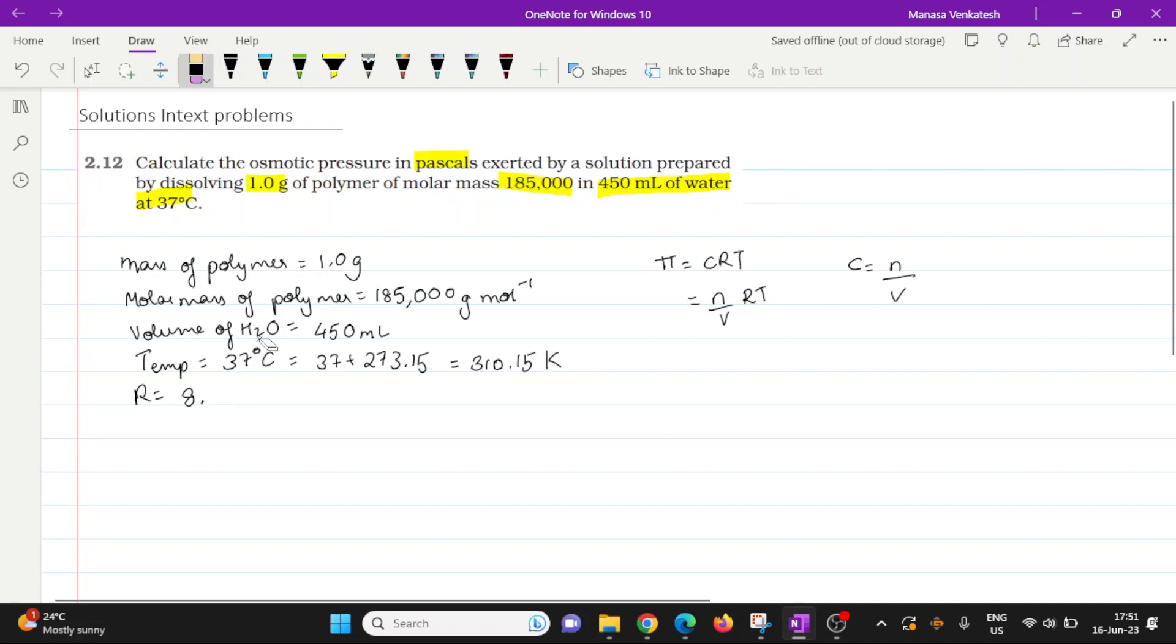we need to use the one which has the unit pascal in. So 8.314 times 10 to the power 3 pascal liters per kelvin per mole. Okay, so this is the value of R.